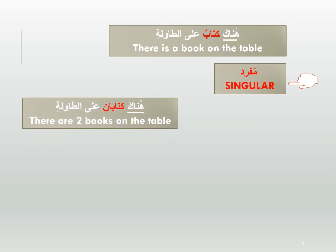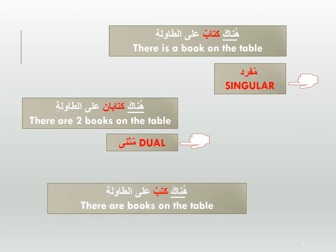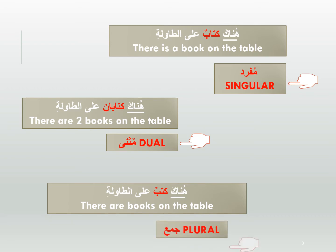Now for the dual noun: Hunaka Kitaban Ala Attawilati. Kitaban means two books. For the plural, more than two: Hunaka Kutubon Ala Attawilati. So to summarize, we can use Hunaka with a Mufrad noun (singular), a Muthanna noun (dual), or a Jami' noun (plural).